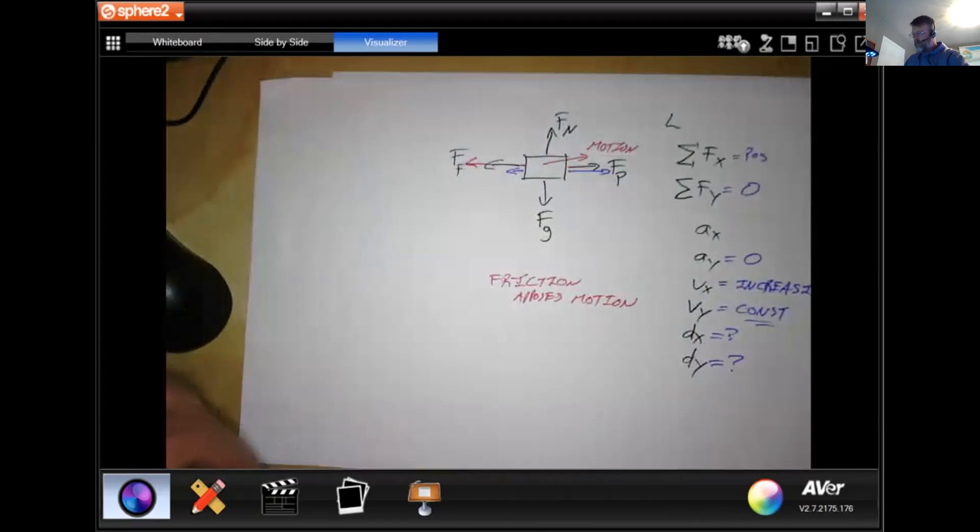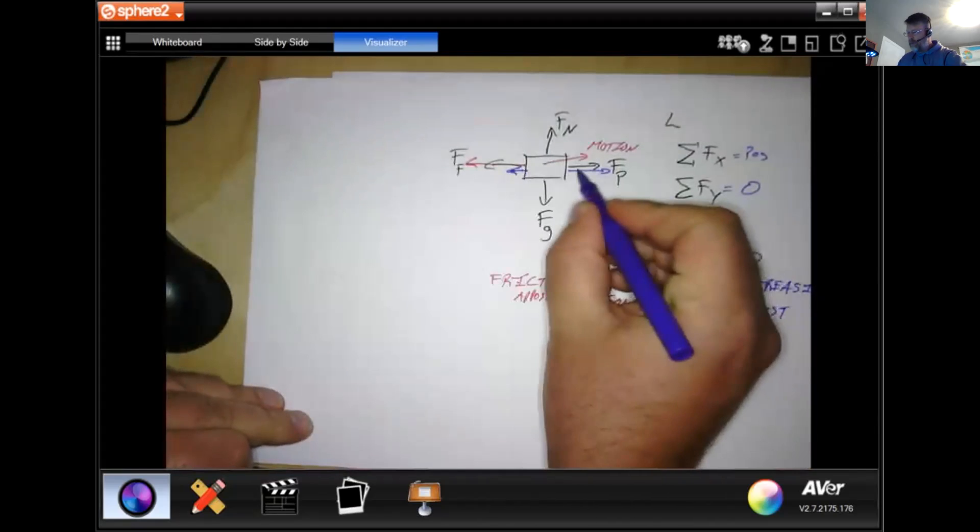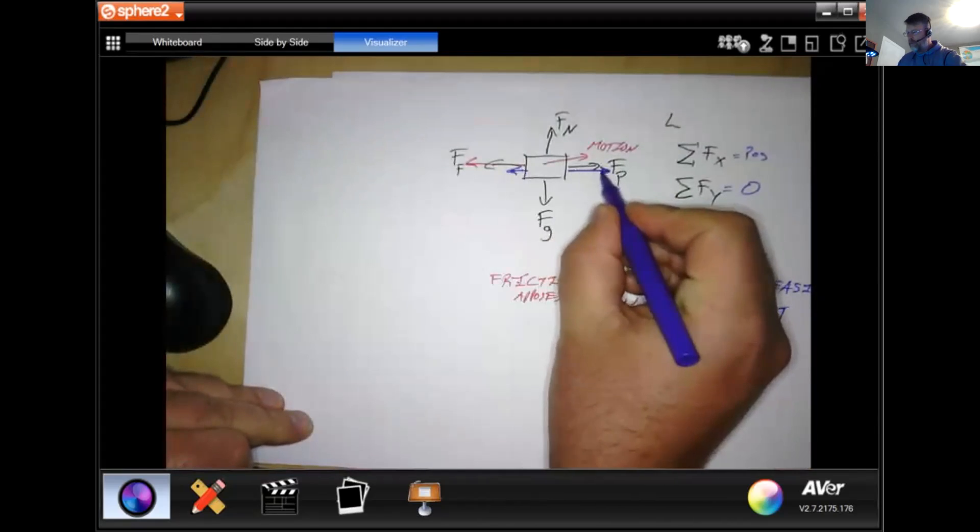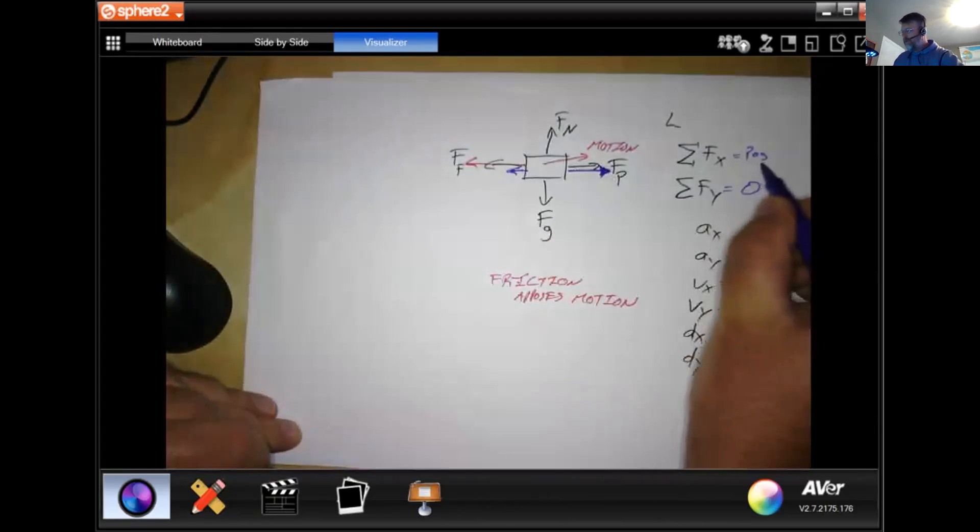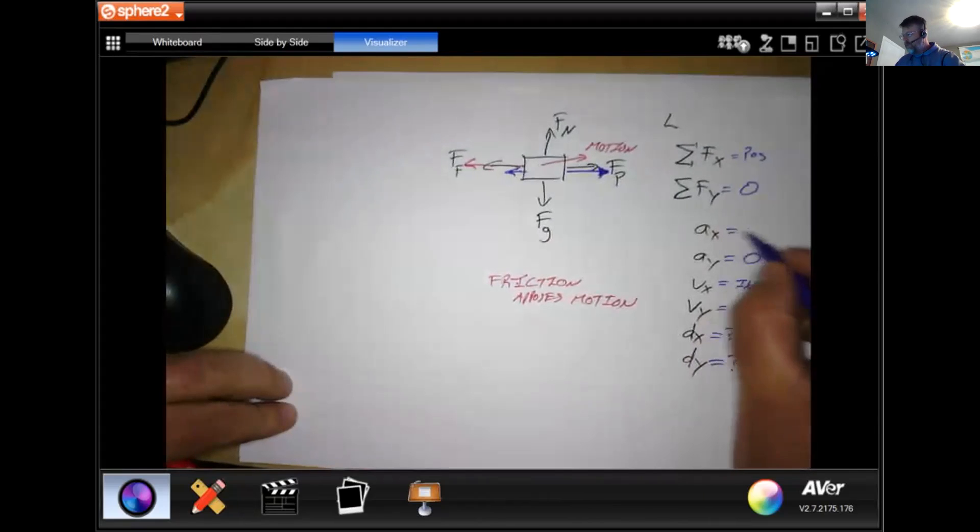Okay, so if we had the purple scenario here, if we had a little bit of friction and a lot of pulling, okay, then we'd have a positive force in the x. Okay, which would mean this would be some positive number as well and that our velocity would be increasing.